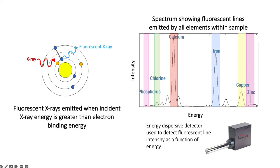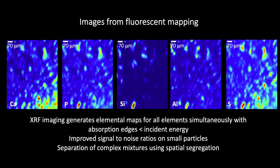Fluorescent x-rays are emitted when the incident x-ray energy is greater than the electron binding energy for an atom. The x-ray comes in and ejects a core level electron, leaving behind a core hole. This configuration is unstable, so an electron with higher energy falls into that core hole, giving off a fluorescent x-ray. Importantly, that fluorescent x-ray energy is characteristic of the element, so we can measure the intensity of x-rays as a function of their energy using an energy dispersive detector to obtain elemental composition. X-ray fluorescence imaging generates elemental maps for all elements in the sample simultaneously, as long as those elements have absorption energies less than the incident energy of the incoming x-ray beam.